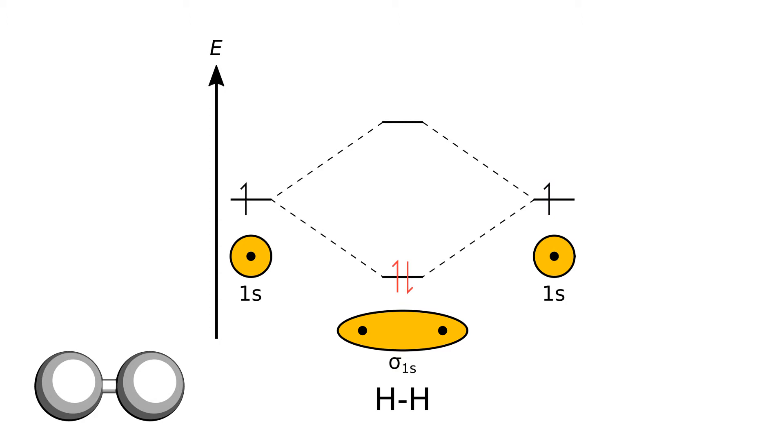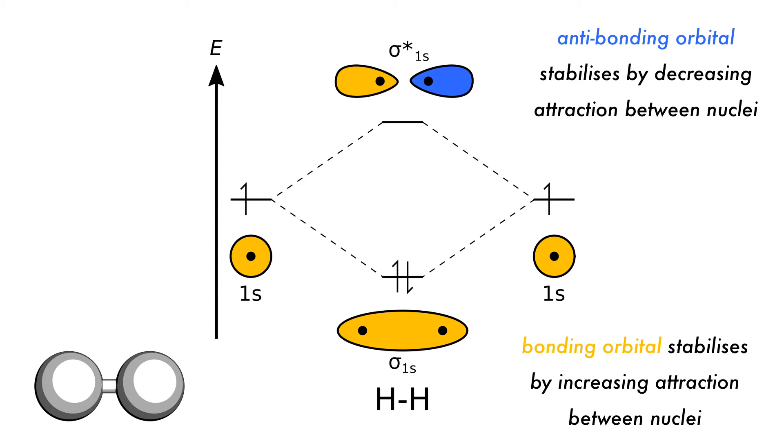This new orbital, which we will call a bonding sigma orbital, has a lower energy than the atomic 1s orbitals because of the increased electrostatic attraction from the other nucleus. Because the total number of orbitals must be conserved, there is a higher energy anti-bonding orbital. If we were to place electrons here, the system would be destabilized. A bonding orbital will tend to place electron density between the nuclei so as to increase their attraction. An anti-bonding orbital will tend to concentrate electron density away from the area between the nuclei, reducing attraction.